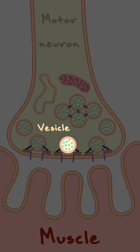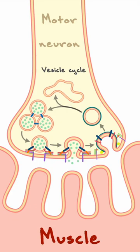In the motor neuron, these chemicals are packaged in small compartments named vesicles, and their release is mediated by a process named the vesicle cycle.